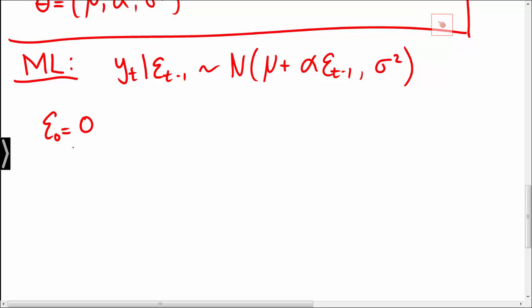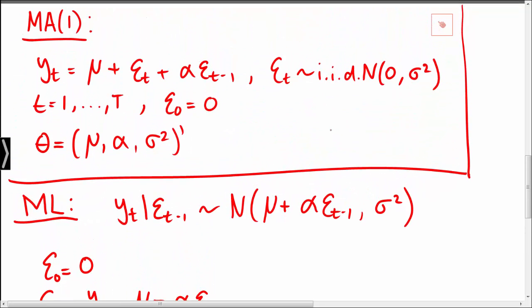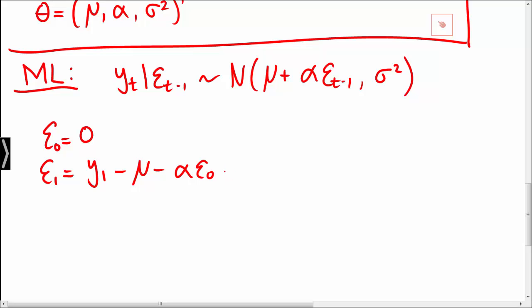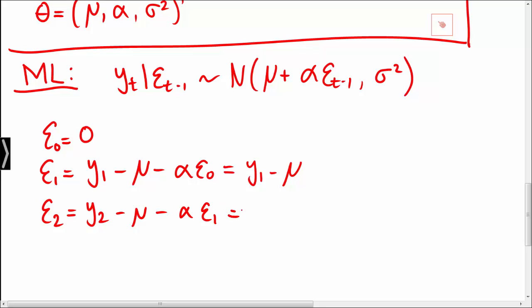Given that epsilon 0 is equal to 0, we are actually able to compute epsilon 1. Specifically, epsilon 1 is equal to y1 minus mu minus alpha times epsilon 0 simply by construction of the model. Since epsilon 0 is equal to 0, epsilon 1 is simply y1 minus mu. Likewise, epsilon 2 is equal to y2 minus mu minus alpha times epsilon 1, which gives epsilon 2 equal to y2 minus mu minus alpha times (y1 minus mu).